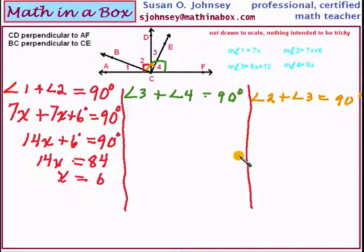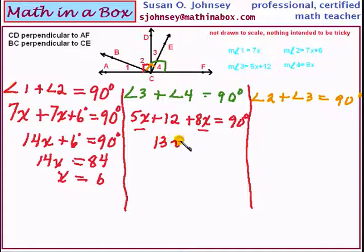Angle 3 plus angle 4. Angle 3 is 5x plus 12. Angle 4 was 8x. So again I'm using the substitution property. When you replace something with what it's equal to, that's substitution. Now then we're going to add the like terms. I have a 5x and an 8x so that will be 13x. And then we have plus 12 equal 90. We will subtract 12 from both sides and we will get 78. If you divide both sides now by 13 you should get 6. Let's find each angle though now.